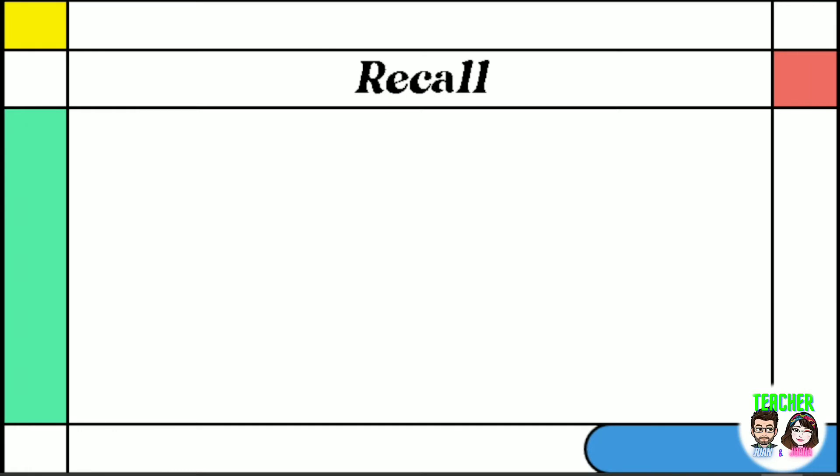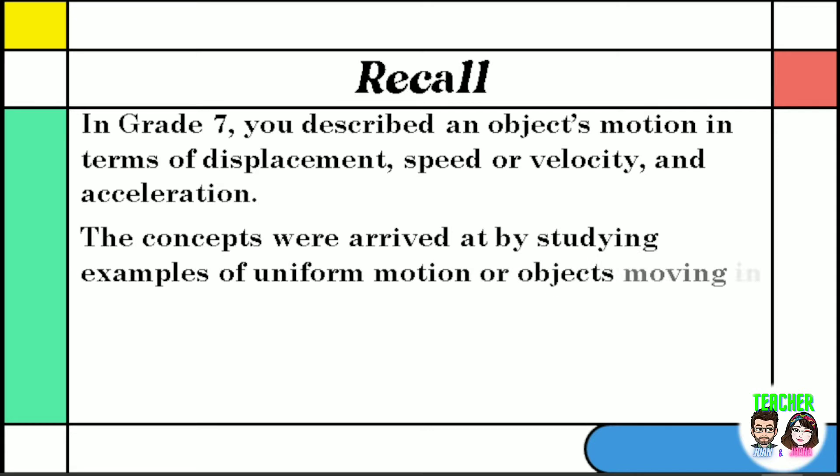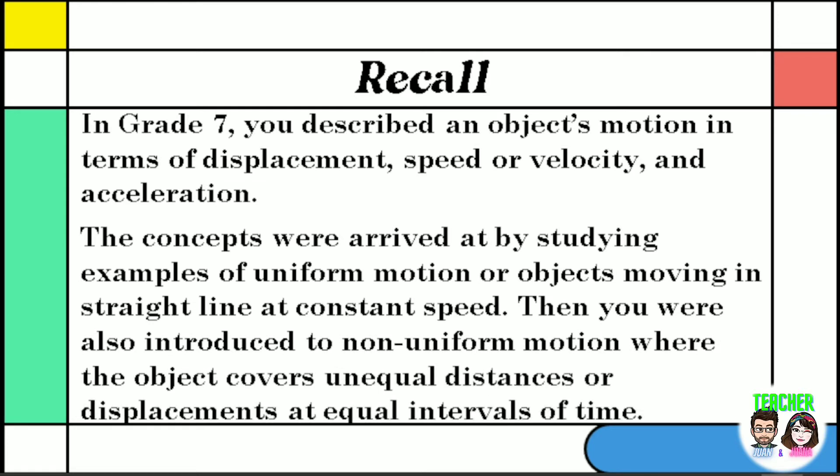In grade 7, you described an object's motion in terms of displacement, speed, velocity, and acceleration. The concepts were arrived at by studying examples of uniform motion or objects moving in straight line at constant speed. Then you were also introduced to non-uniform motion where the object covers unequal distances or displacements at equal intervals of time.